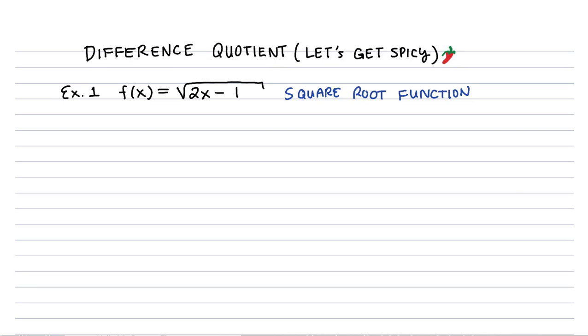Let's jump into part two of the difference quotient, and we're going to focus on probably the two algebraically hardest to simplify examples. To get started, let's look at our first example, and we're going to compute the difference quotient for the function f(x) equals square root of 2x minus 1.